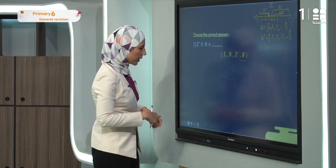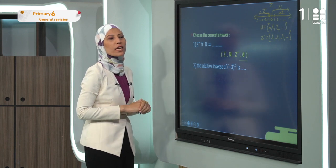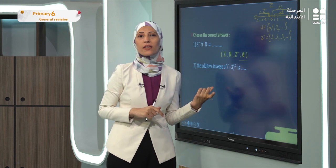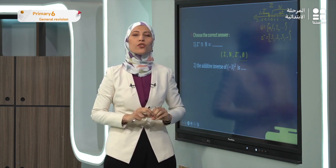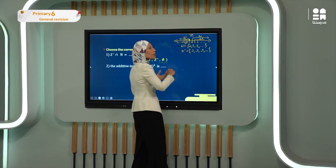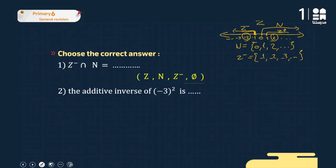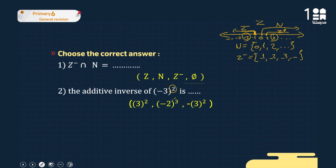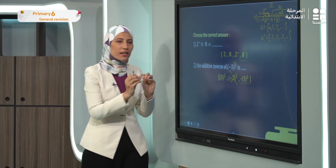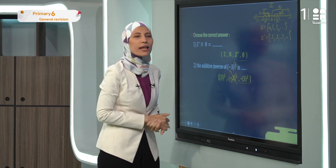Next: the additive inverse of (-3)². The additive inverse is the opposite of the number on the number line. Since the power is even, (-3)² becomes a positive 3. The inverse of positive 3 would then be negative 3. It's a tricky choice, but step by step you can answer it easily.